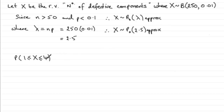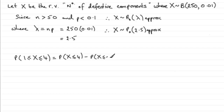So how are we going to work out this probability? We can say that this is the same as the probability that X is less than or equal to 4, minus the probability that X is less than or equal to 0. We don't want to include 1, so the values in between will be 1, 2, 3, and 4.